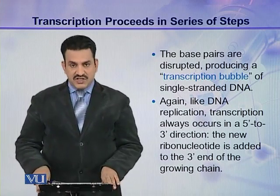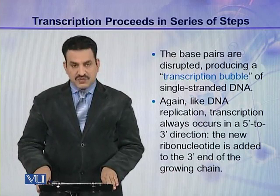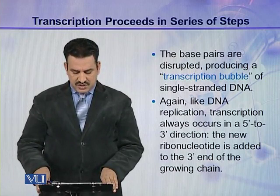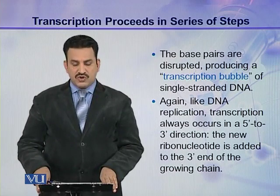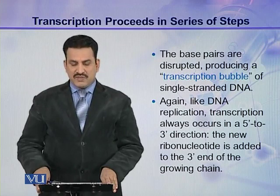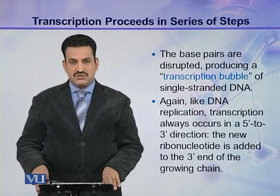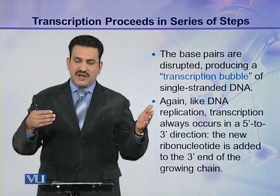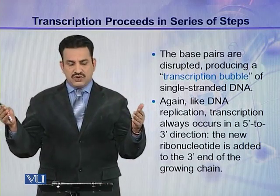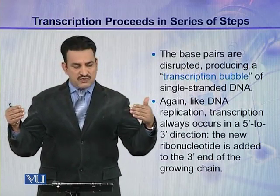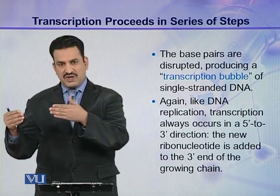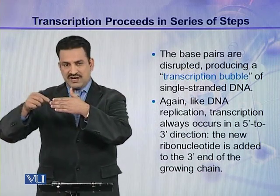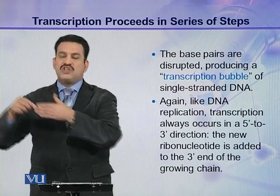Like DNA replication, transcription always occurs in a 5' to 3' direction. That is, each new ribonucleotide is added to the 3' end of the growing chain. The polarity of DNA is 5' and 3', and transcription proceeds from 5' to 3', meaning new nucleotides are added at the 3' end.